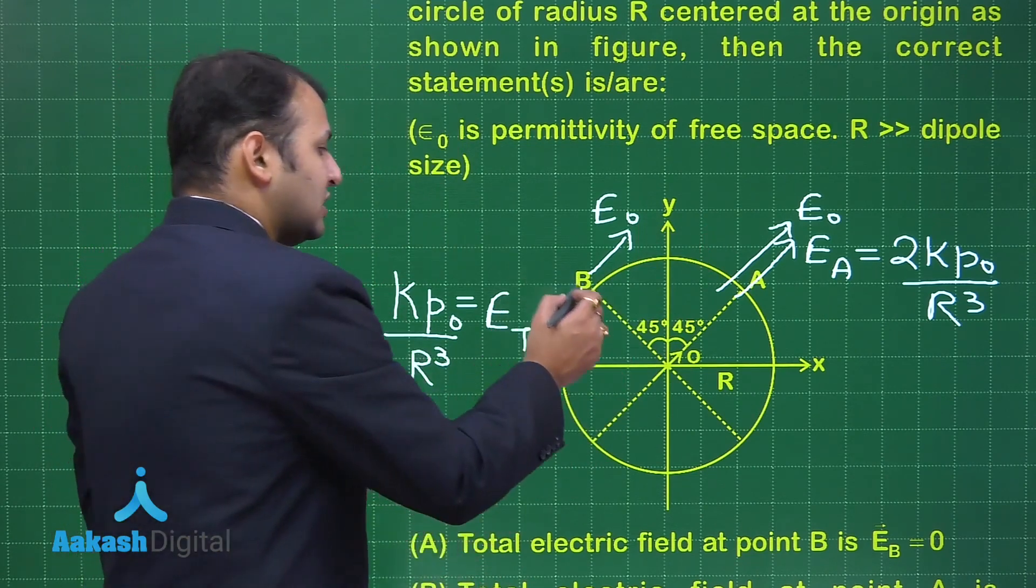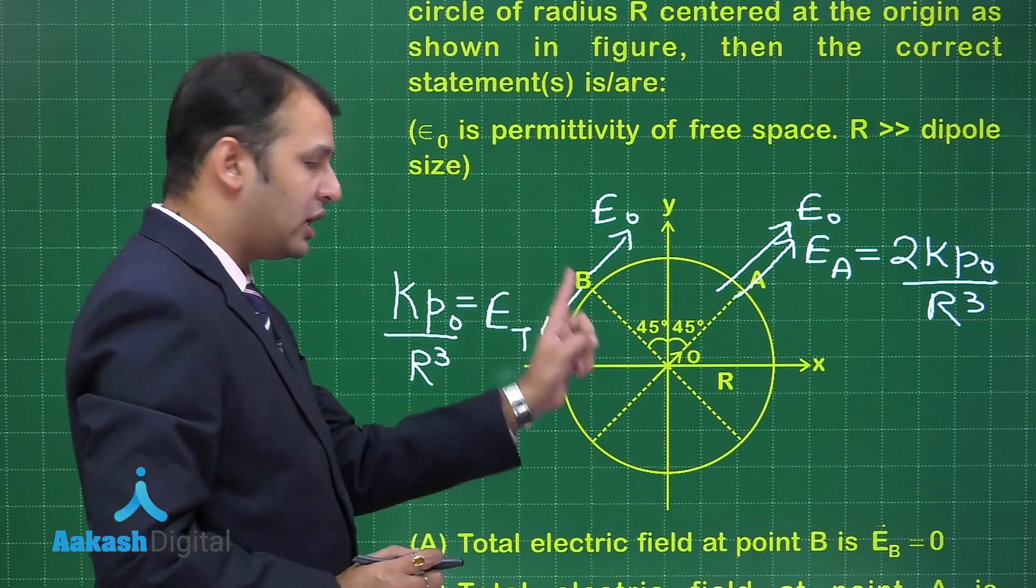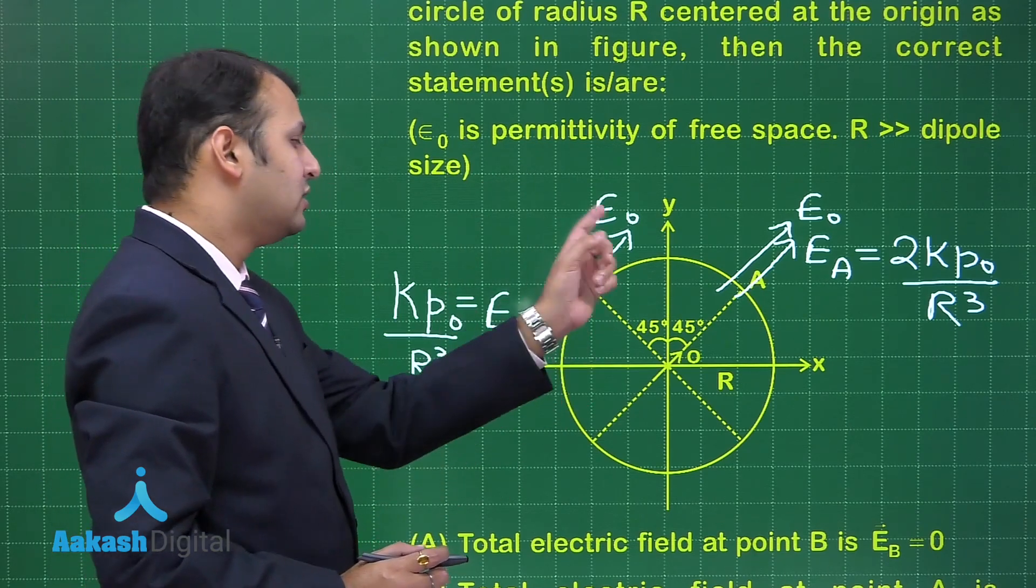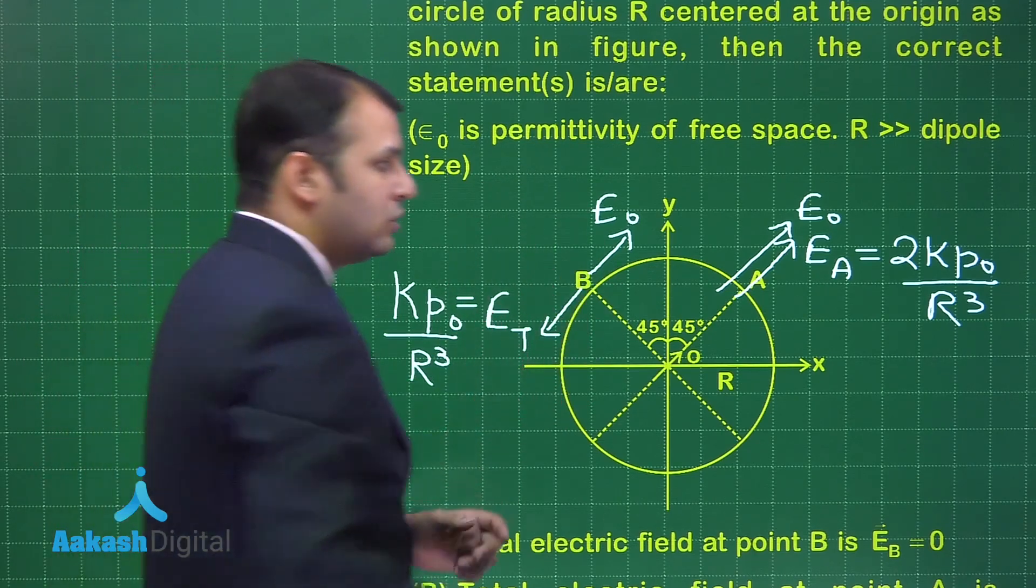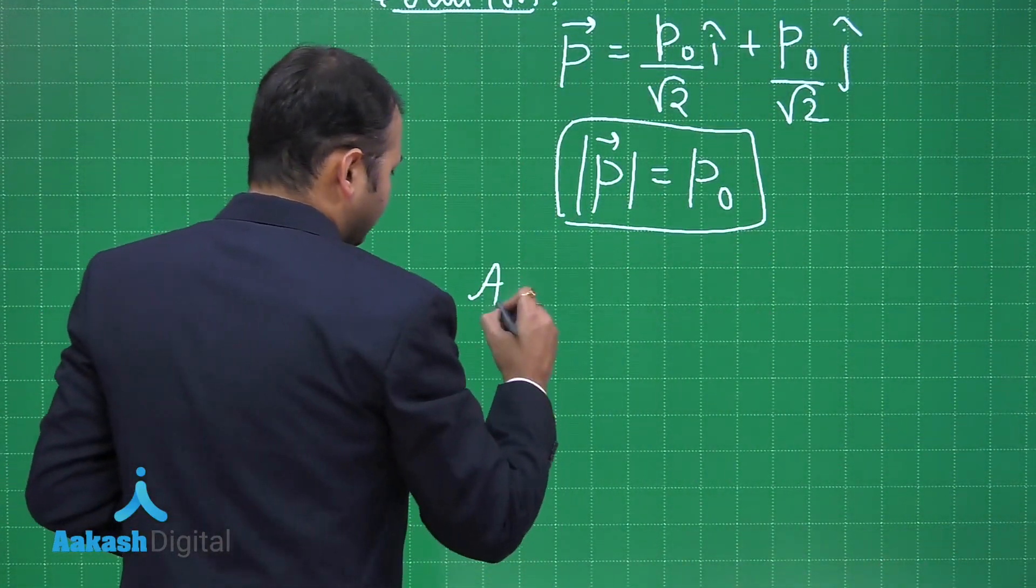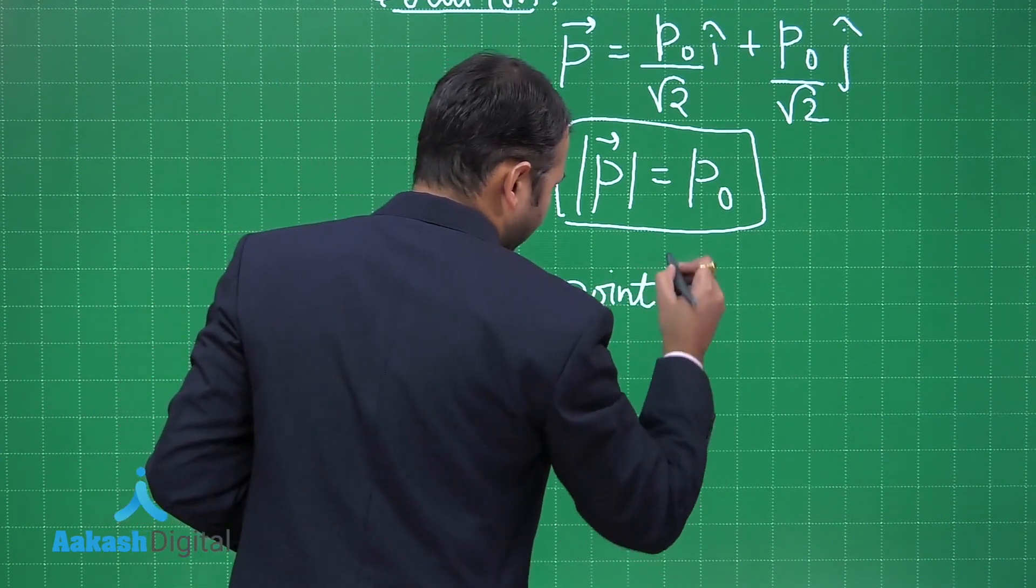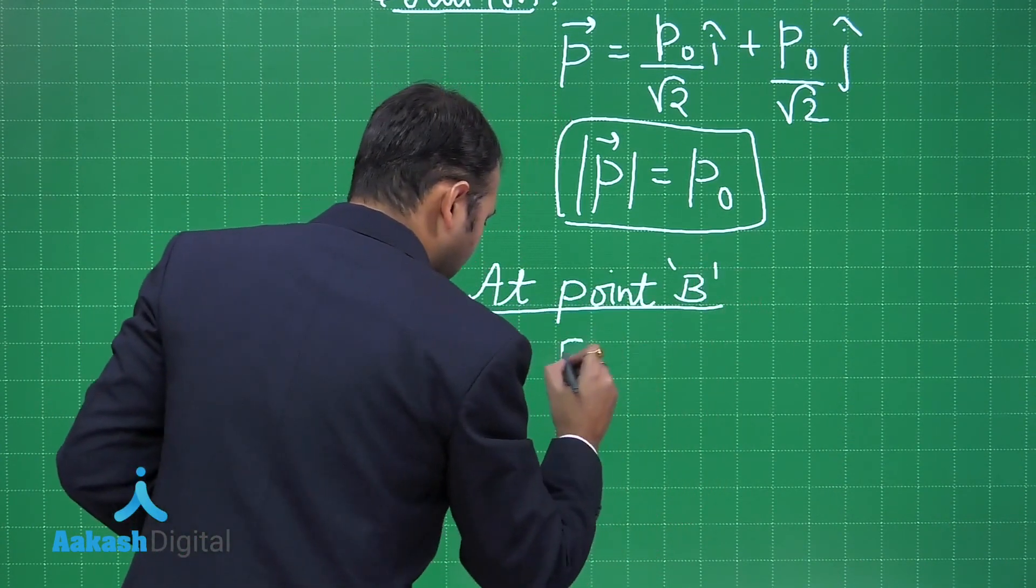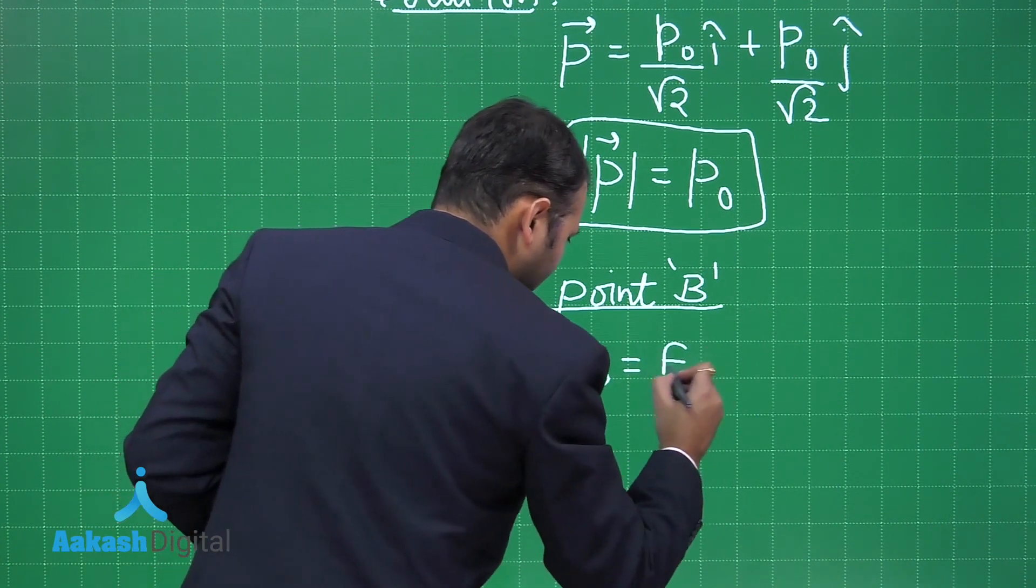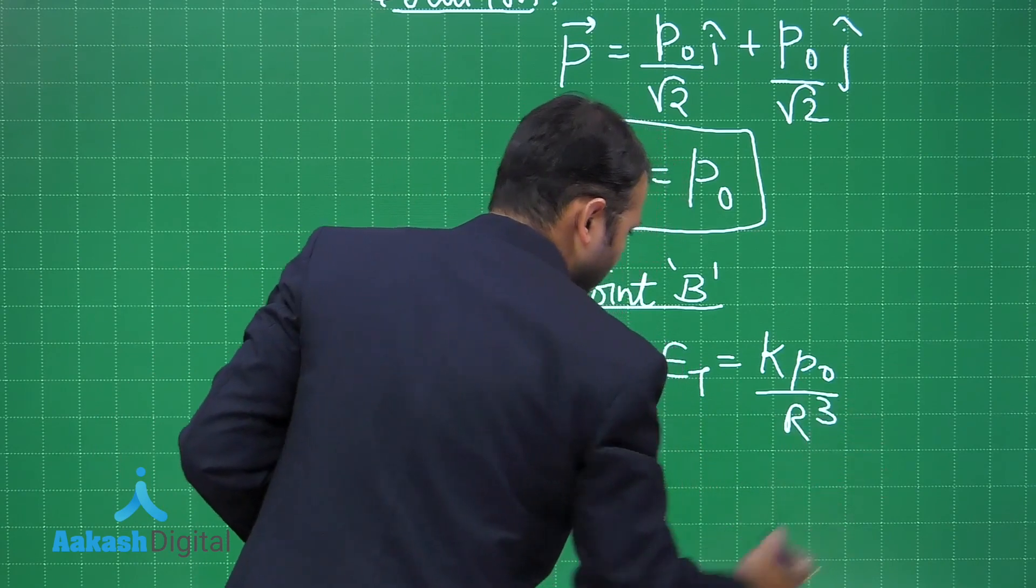That's why you can say that at B, if E₀ cancels E_T, then there is no tangential component and that's why the magnitudes get 0. So if you understand properly at point B, E₀ should be equal to E_T, that equals to kP₀/R³.